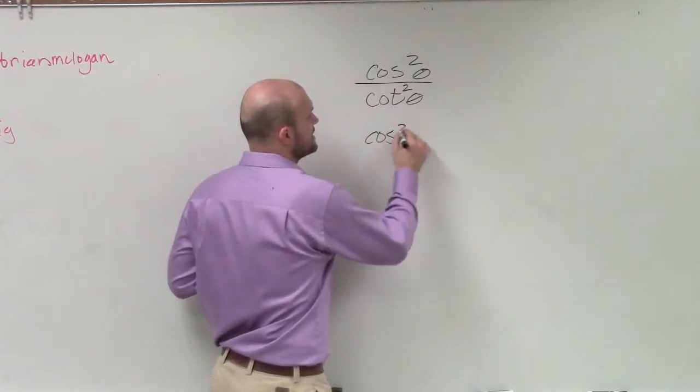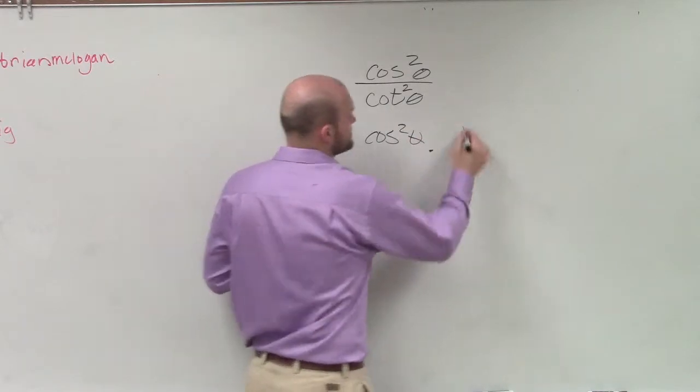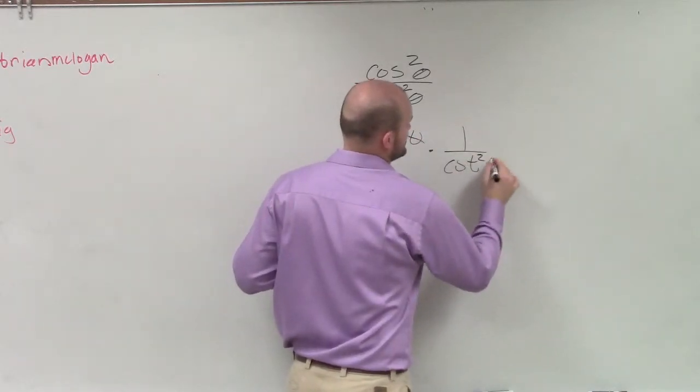So I can rewrite this as cosine squared of theta times 1 over cotangent squared of theta.